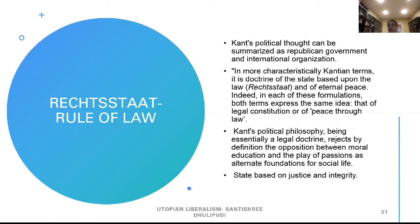On the rule of law and the Rechtsstaat: Kant's political thought can be summarized as republican government and international organization. In more characteristically Kantian terms, it is the doctrine of the state based upon the law and of eternal peace. In each of these formulations, both terms express the same idea — that of legal constitution, or peace through law. Kant's political philosophy, being essentially a legal doctrine, rejects the opposition between moral education and the play of passions as alternate foundations for social life.